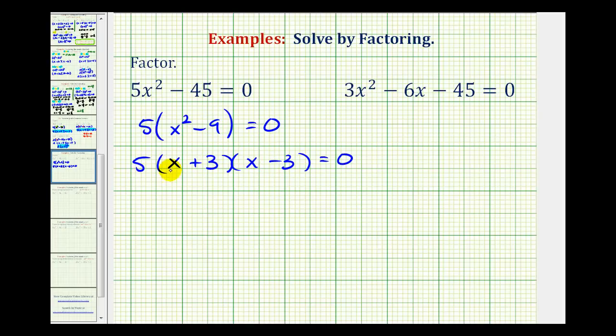Now this product is only going to equal zero when x + 3 = 0 or when x - 3 = 0. There's no variable with the 5, so this is not going to give us a solution.